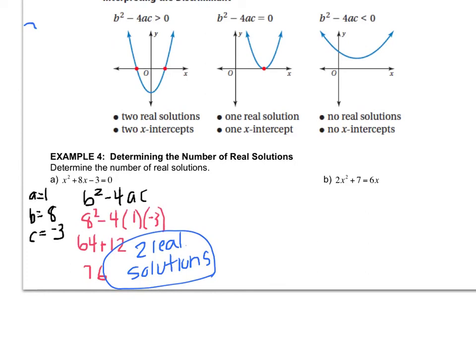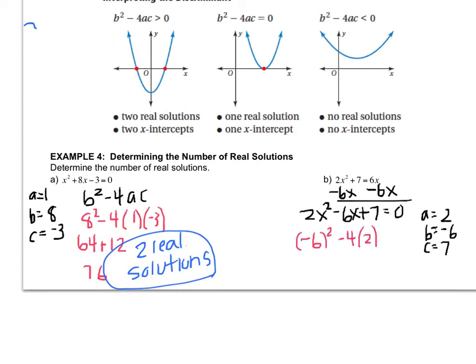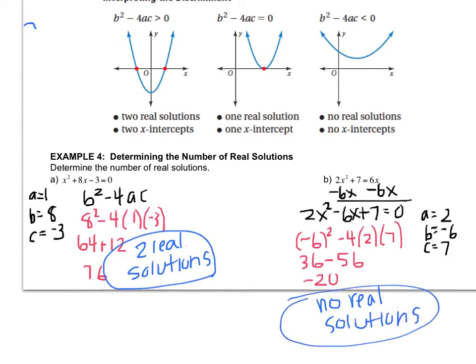Let's check out the other one. Before you do that, if you want to do this on your own, that's fine, but I will warn you that you have to move the 6x over. Now you can do A, B, and C. b is -6, 4 times 2 times 7, that is 36 - 56, so that's -20. Since the discriminant is negative, then that means I have no real solutions. If you have questions, write them down and ask me when you see me next.